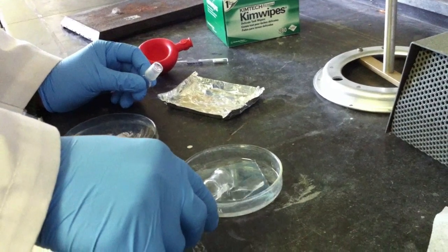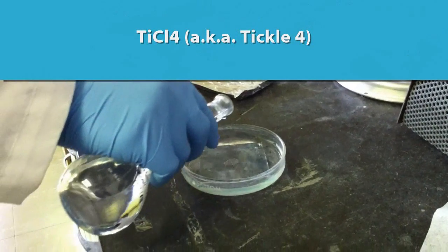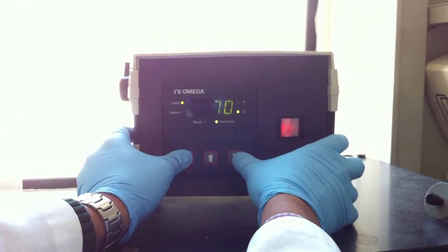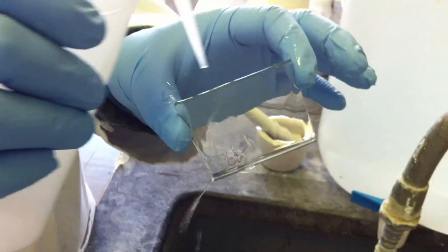To deposit this layer, we use an aqueous solution of titanium tetrachloride poured over the surface of the electrode and then treat at 70 degrees Celsius to form titanium dioxide. After heating, the electrode is rinsed with deionized water and ethanol.